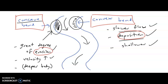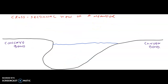Now, we should always bear in mind this is an aerial view — a view from above. But let us look at a cross-sectional view, which will give a better understanding in terms of what features can actually be found in a meandering river pattern, specifically referring to the concave and the convex bank. Let us look at the cross-sectional view of a meander.